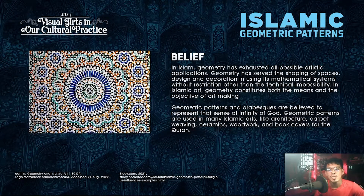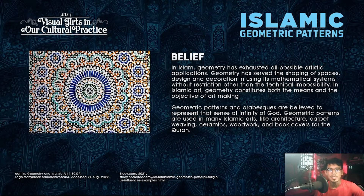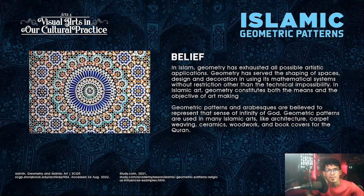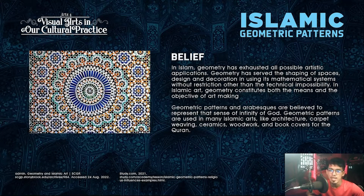In Islamic art, geometry constitutes both the means and the objective of art making. It's calculated, not metaphysical — it's objective, not subjective, not made just to be made. Geometric patterns and arabesques are believed to represent the sense of infinity of God. Geometric patterns are used in many Islamic arts like architecture, carpet weaving, ceramics, woodwork, and book covers for the Quran.